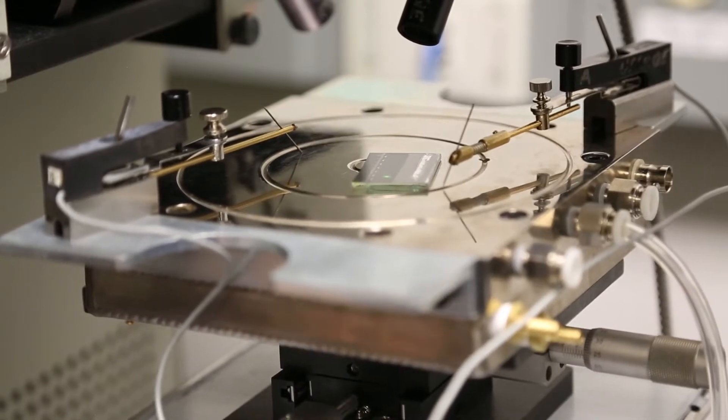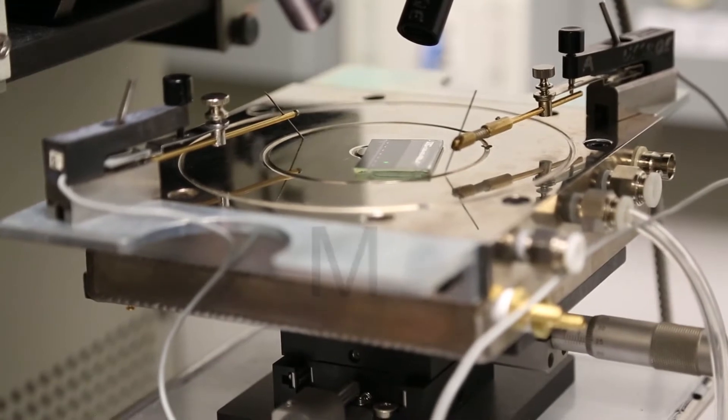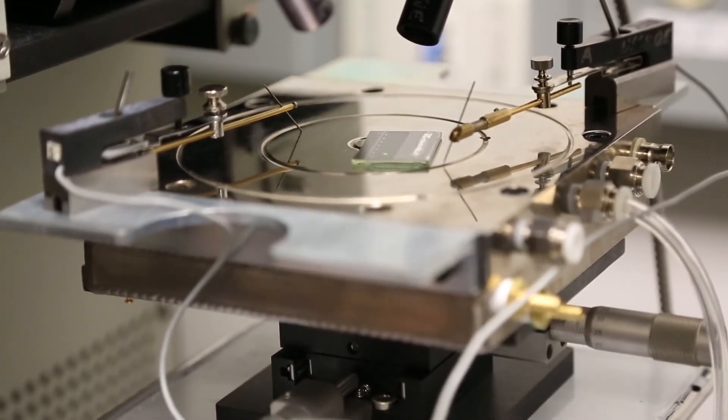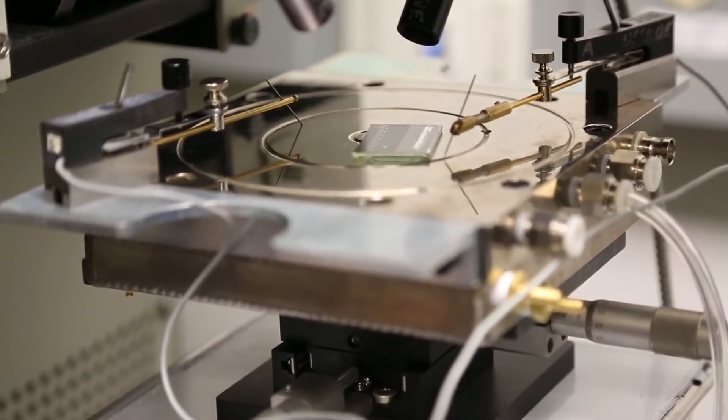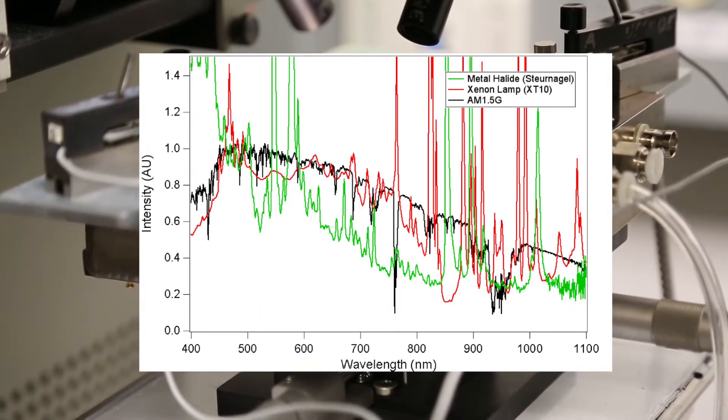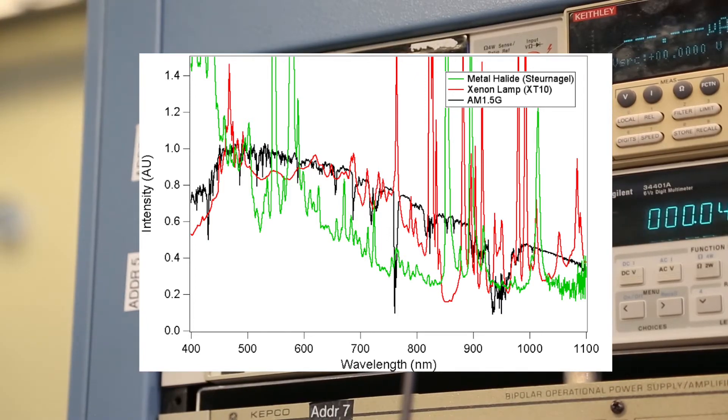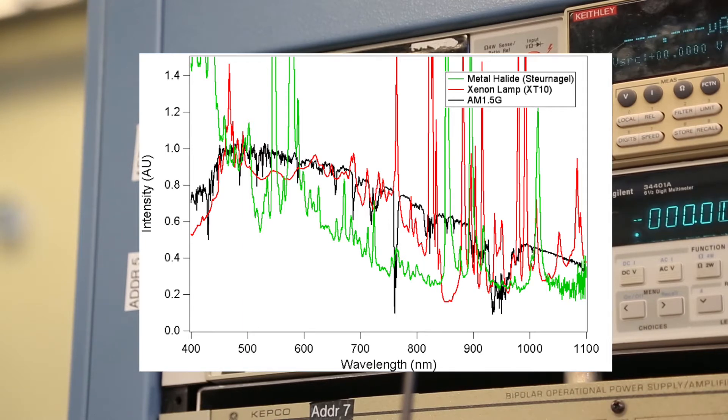Corrections can be made using the spectral mismatch factor M. This captures the difference in intensity between the AM 1.5G solar spectrum and the lamp spectrum used for solar simulation. In the graph shown, the wavelength versus intensity of two common solar simulator lamps is compared to the AM 1.5G spectrum. It is clear that there is spectral mismatch shown by varying light intensities at given wavelengths when compared to AM 1.5G.